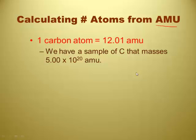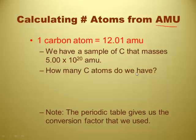What that means is if we have a sample of carbon that masses 5.00 times 10 to the 20th AMUs, we can actually figure out how many atoms there are. And it turns out that the periodic table gives us the conversion factor that we used, which is one carbon atom is 12.01 AMUs. But what we do is we set up a conversion, dimensional analysis, factor labeling. So we do exactly what you'd predict - we use the bottom to try and cancel at the top. So we use AMUs on the bottom.